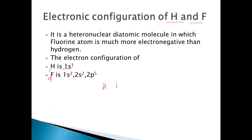There is a large electronegativity difference between hydrogen and fluorine. In fact, fluorine is the most electronegative element in the whole periodic table. Electronegativity is the tendency to attract electrons. So fluorine is the most electronegative element, and there is a vast difference in electronegativity between hydrogen and fluorine.